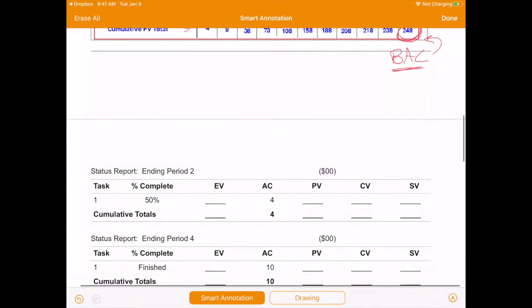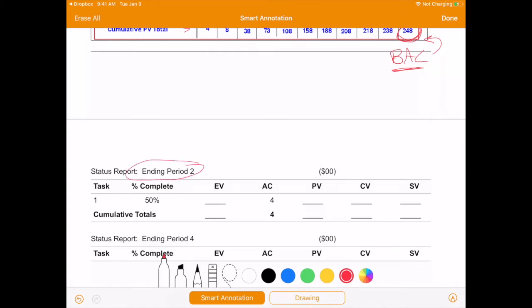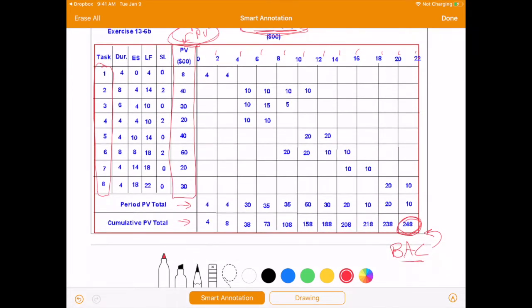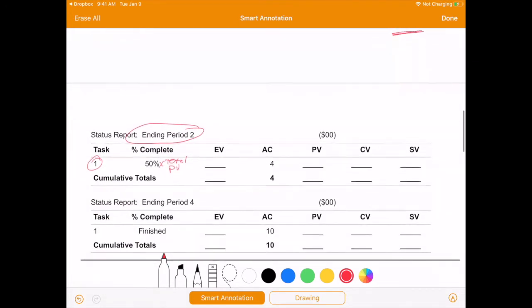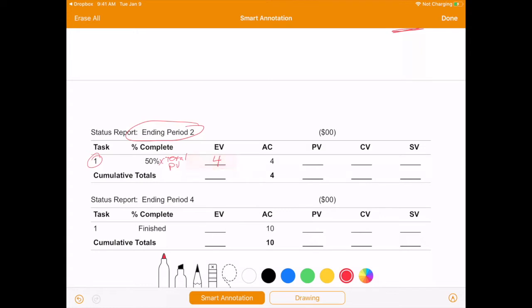So let's look at actually doing some of these calculations. So here we have a status report that's required for the end of period 2. Now, earned value is simply the percentage complete times the total plan value for a particular activity. So in this case, it's task 1. The total plan value is 8. 50% of 8 is around about 4. Our actual cost comes from our friendly accountants.